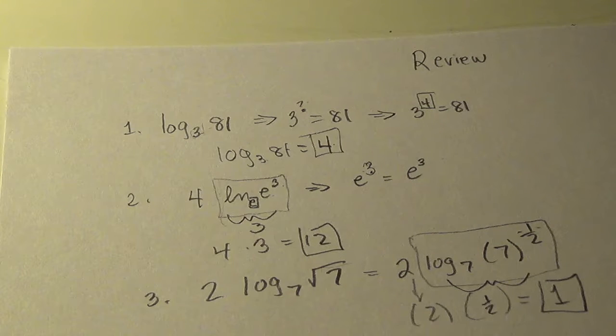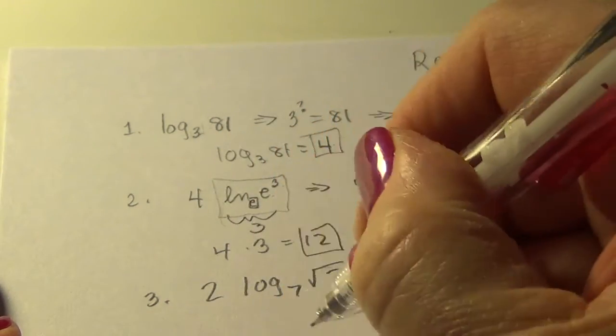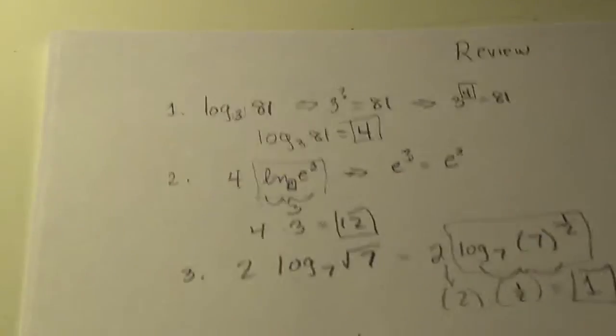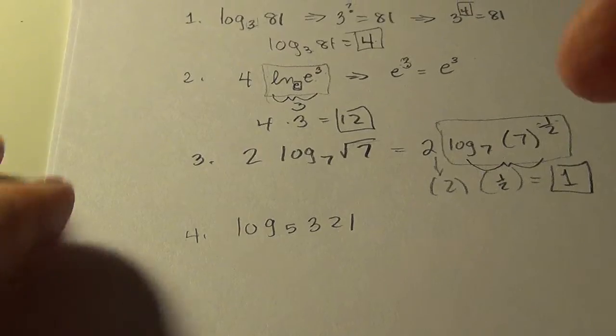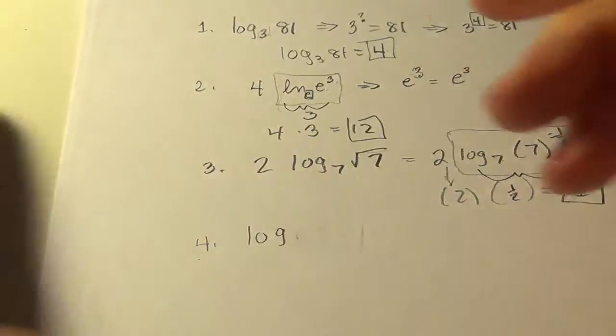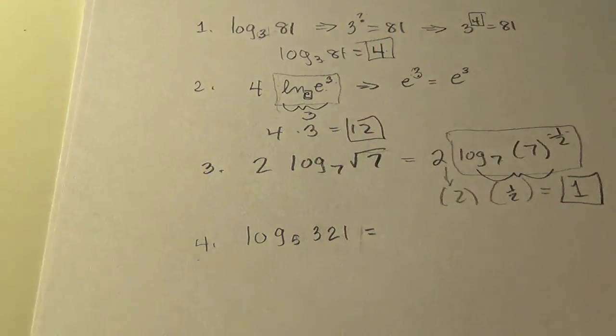On the next one, this one is log of the base five of 321. Let's get that in sight there. Log to the base five, let me make that look more like a base. Log to the base five of 321 equals. So on this one...